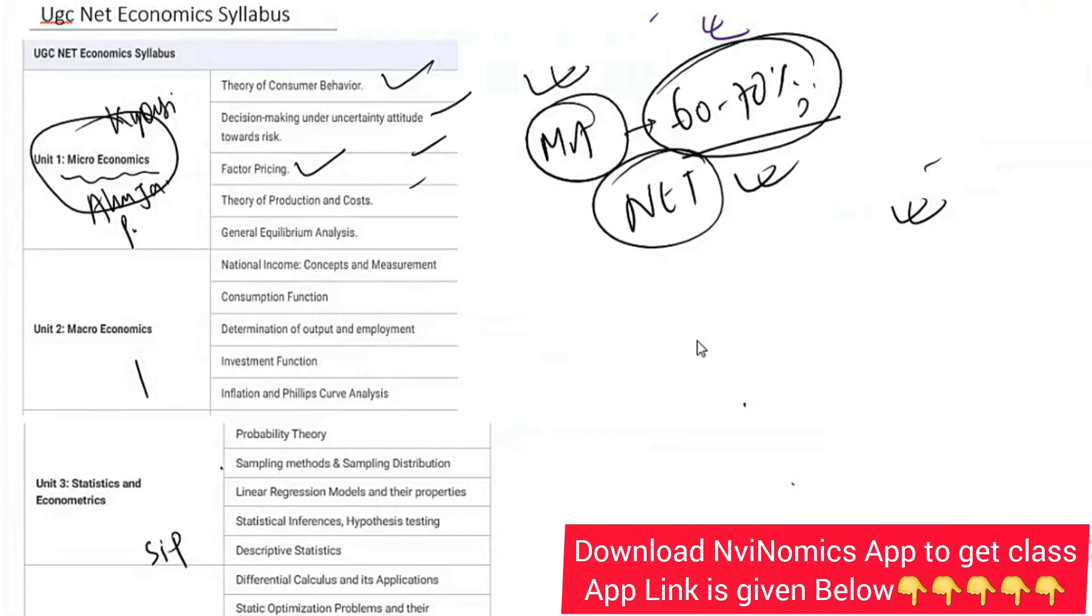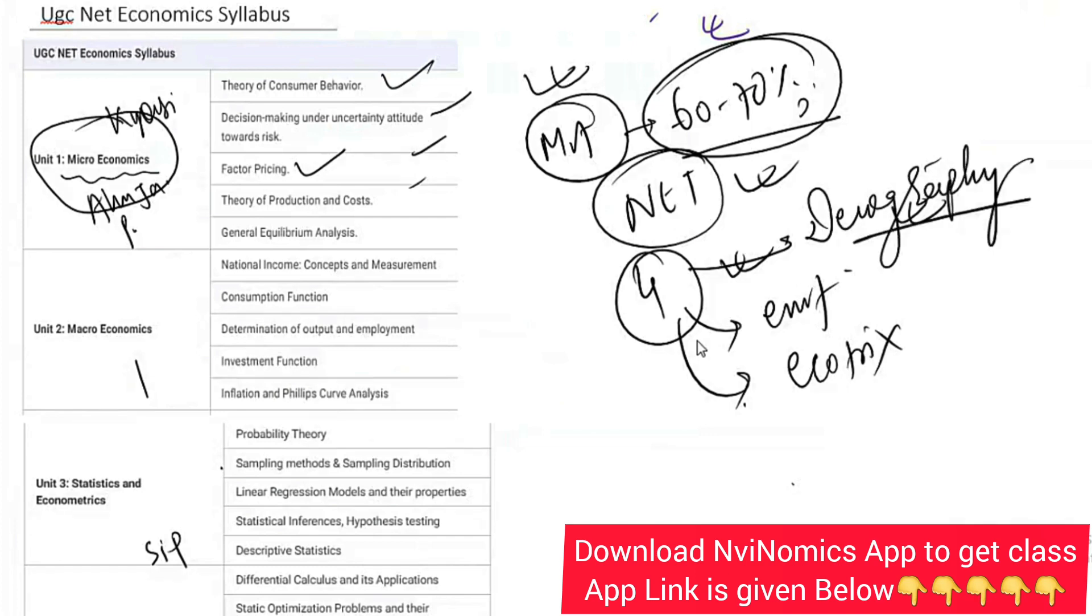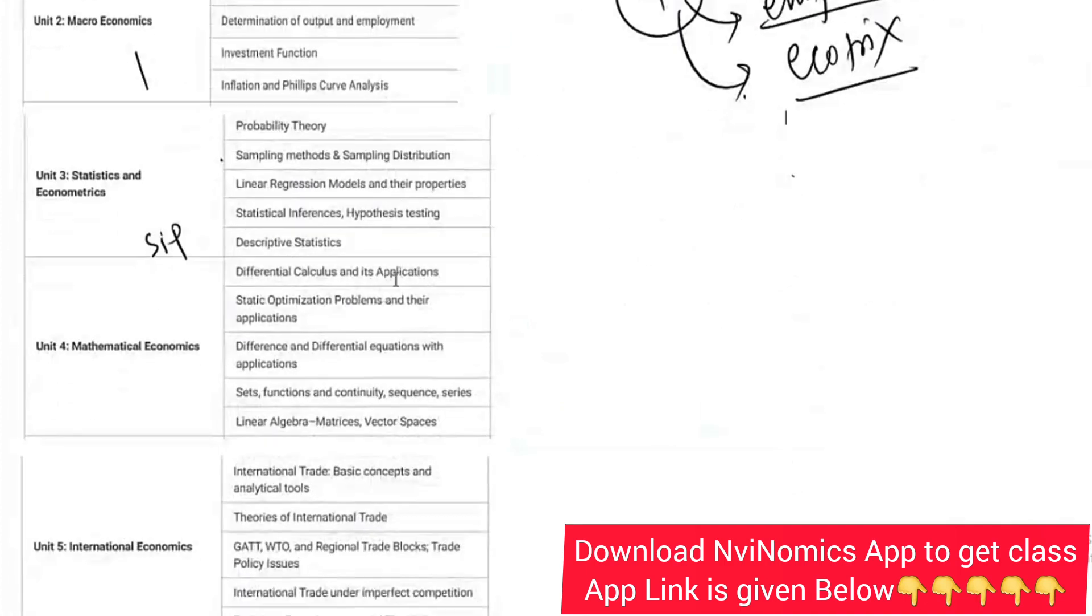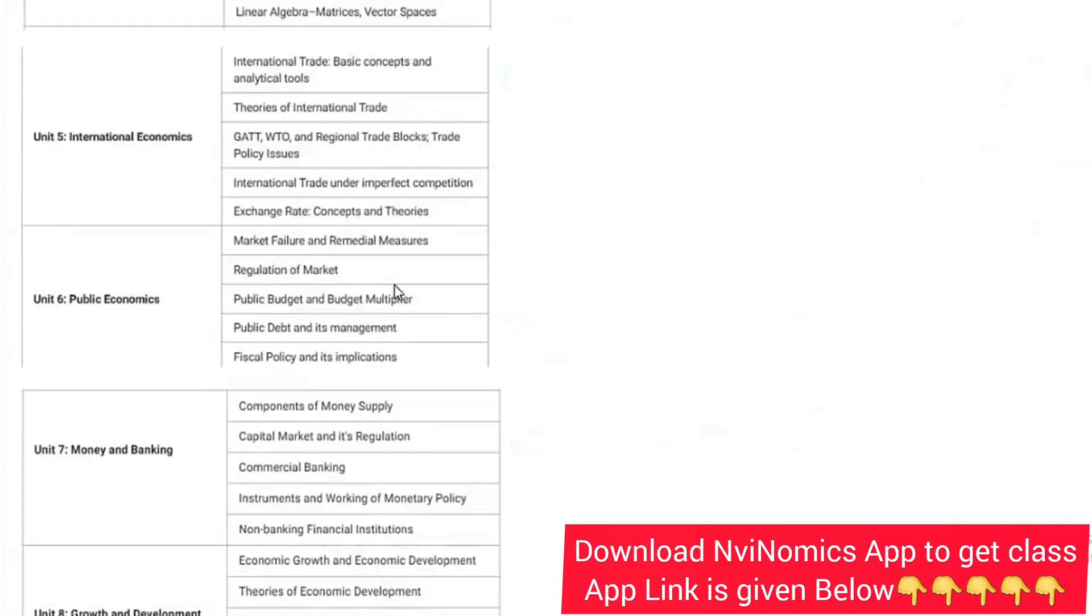There are four new topics that you have to study: environment, econometrics or you call econometrics, and demography.